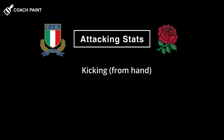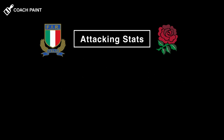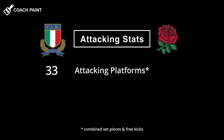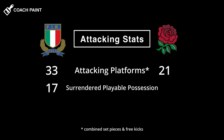Both teams had similar kicking stats — Italy kicked from hand 24 times to England's 21. Italy also had attacking possession 39 times to England's 38. However, Italy had the chance to play from 33 attacking platforms compared to England's 21, and what that means is that on approximately 17 occasions, England were given possession in play compared to 6 times for Italy.